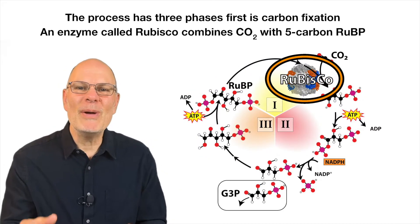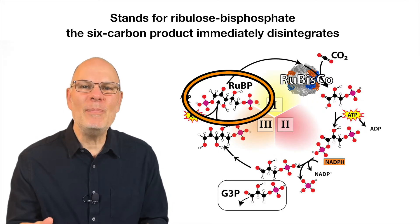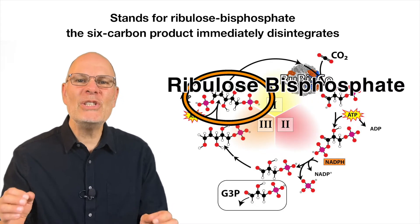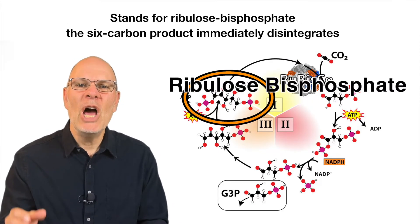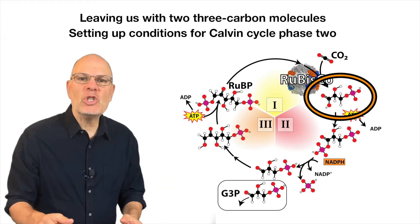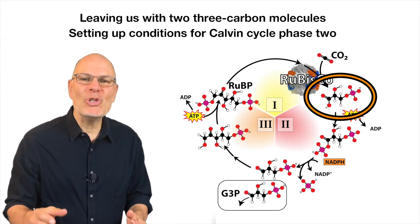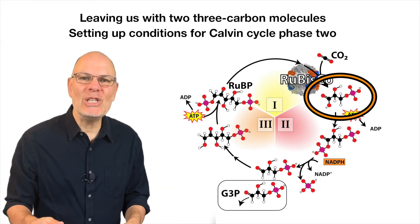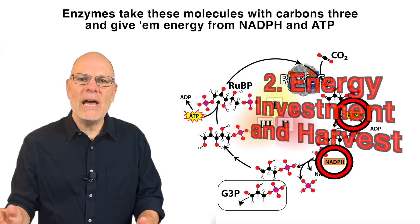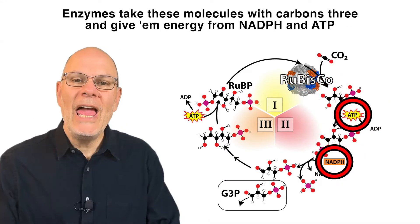An enzyme called Rubisco combines CO2 with 5-carbon R-U-B-P, which stands for ribulose bisphosphate. The 6-carbon product immediately disintegrates, leaving us with two 3-carbon molecules, setting up conditions for Calvin Cycle Phase 2.